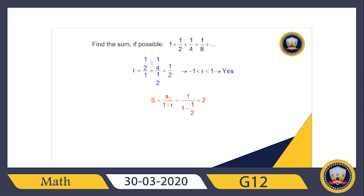In this example, we have a geometric sequence. To find r, we divide consecutive terms: (1/2) ÷ 1 = 1/2. The absolute value of r is less than 1, so yes, we have a summation. Using the formula — first term over (1 minus r) — we get 2. So if you add these terms to infinity, you get 2.